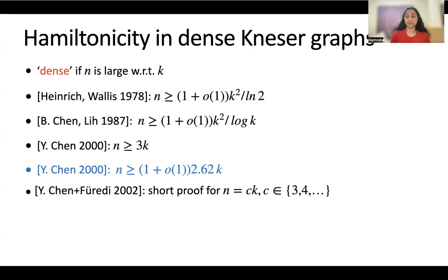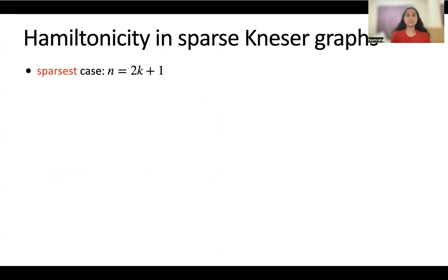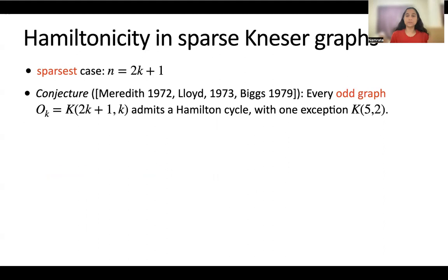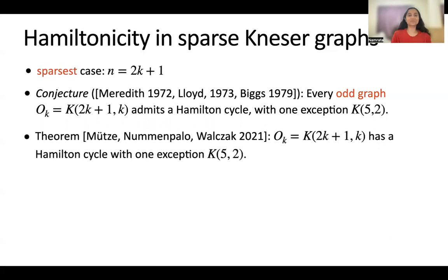Now for sparse Kneser graphs: the sparse case is n equals 2k+1, and such graphs are called odd graphs. In 1972, 73, and 79, three different people — Meredith, Lloyd, and Wiggs — conjectured that every odd graph admits a Hamilton cycle, with one exception: the Petersen graph, which admits a Hamilton path but not a Hamilton cycle. Then 45 years later, Mütze, Nummenpalo, and Walczak in 2021 proved that all odd graphs are indeed Hamiltonian, again with the exception of the Petersen graph.